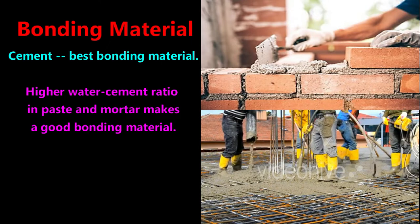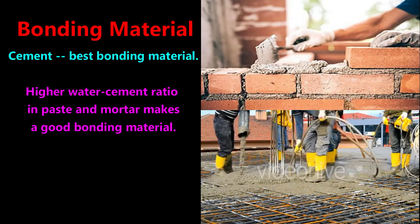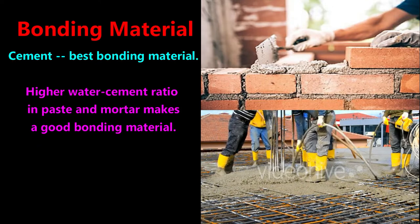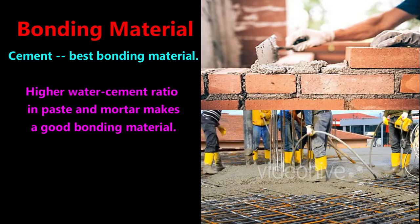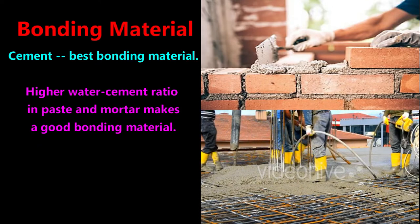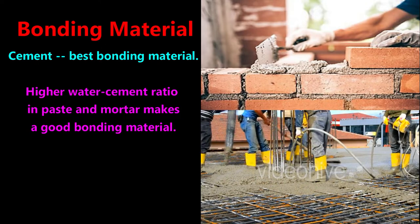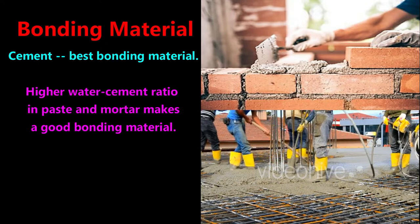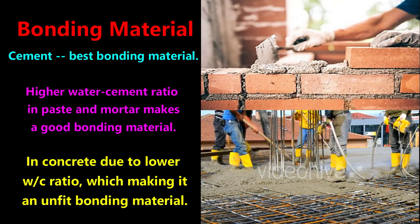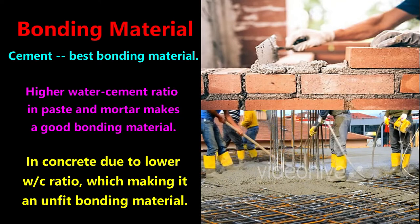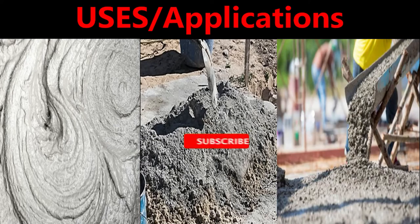Next, which material acts as a bonding material. Cement acts as the best bonding material. A higher water-cement ratio in paste makes cement paste a perfect glue to bond materials like bricks. A higher water-cement ratio in mortar also makes mortar a good bonding material. But in concrete, due to a low water-cement ratio, it is an unfit bonding material.